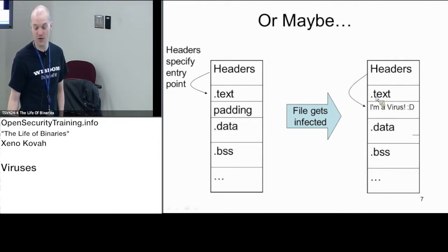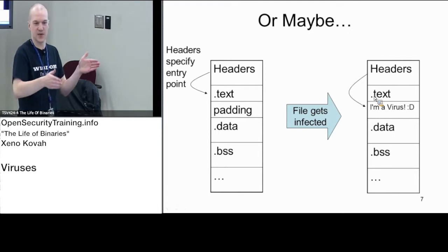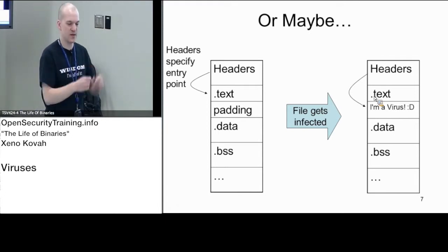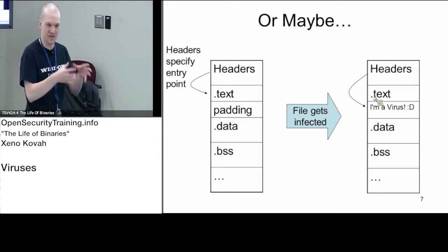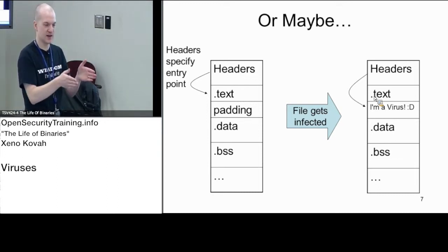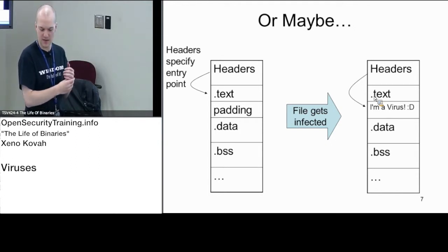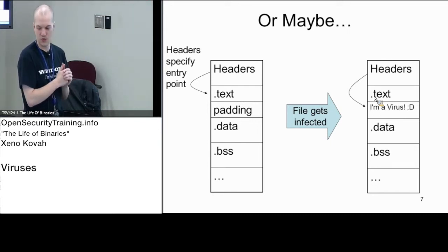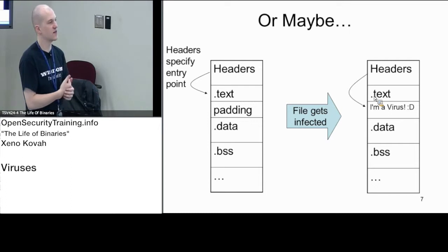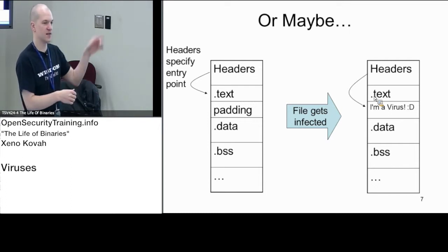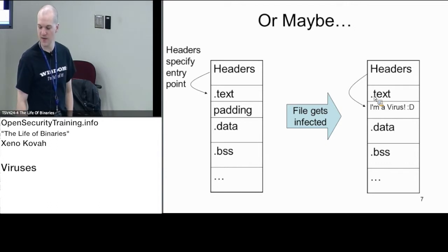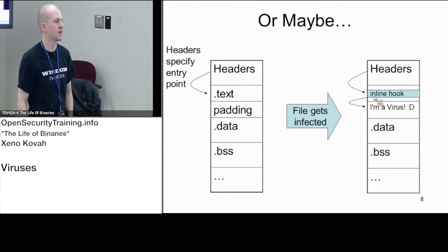You could also have the virus code be within the dot text section itself. If there's a little slack space at the end of the text section — some padding in the file — you could place the virus there within that padding location. This is more common with ELF viruses, but in the PE context you could have, say, 0x200 bytes of potential slack space at the end of your dot text section, put yourself there, and still ostensibly be within the dot text section. You can play the same game with inline hooks and so forth.